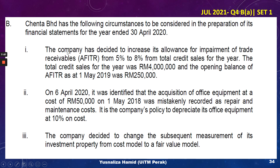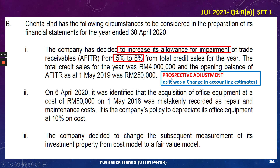Circumstance one: the company decided to increase its allowance for impairment of trade receivables from 5% to 8% of total credit sales. Total credit sales for the year were 4 million and the opening balance of the allowance for impairment was 250,000. This is a change in accounting estimates. As you may recall from lecture, a change in accounting estimate is done prospectively — meaning adjustment is made in the period of change and in future periods should the change affect both. So the answer here is prospective adjustment.